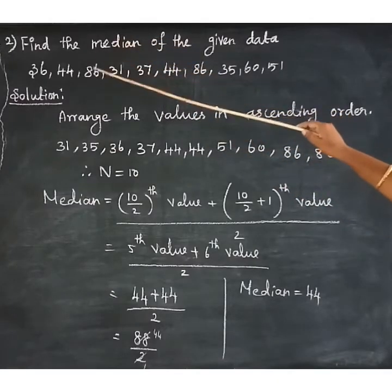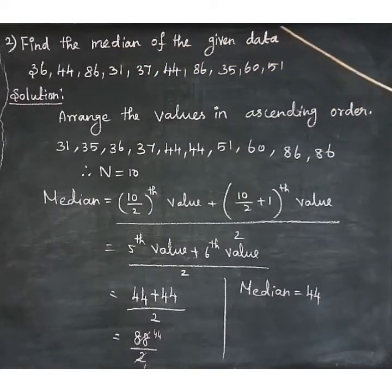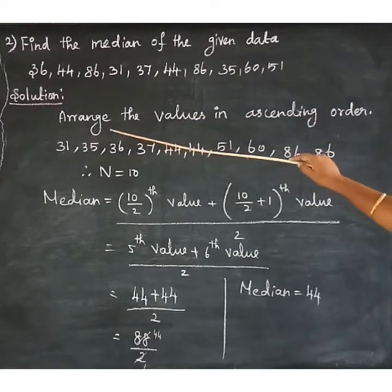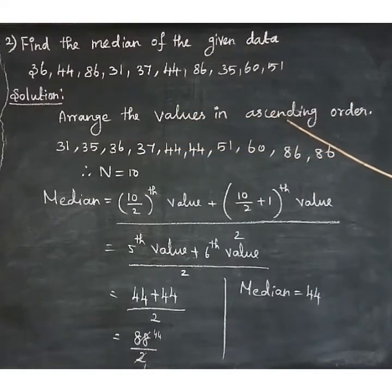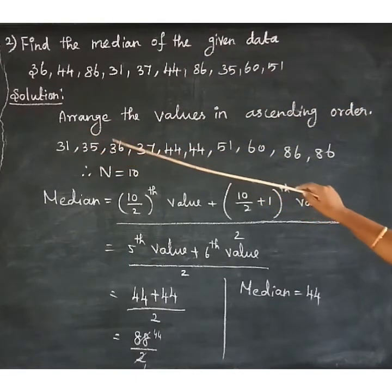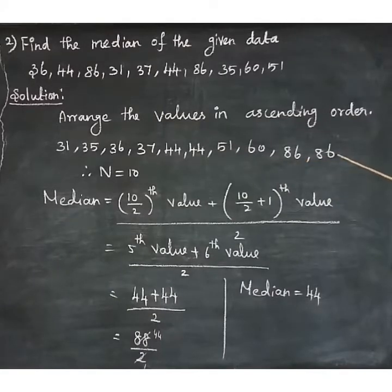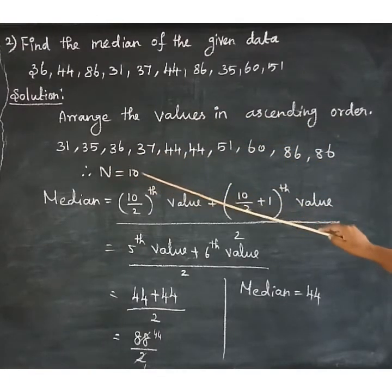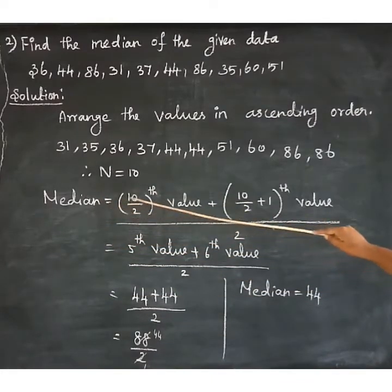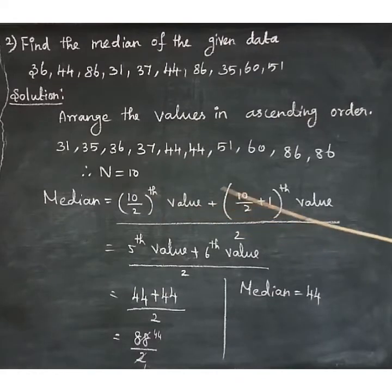Second question: find the median of the given data. 10 data values are given. First, arrange the values in ascending order, smallest to biggest: 31, 35, 36, 37, 44, 44, 51, 60, 86, 86. Total number of observations is 10, so n equals 10. The median formula is: (n/2 term + n/2+1 term) divided by 2, which gives (10/2 term + 10/2+1 term) / 2.